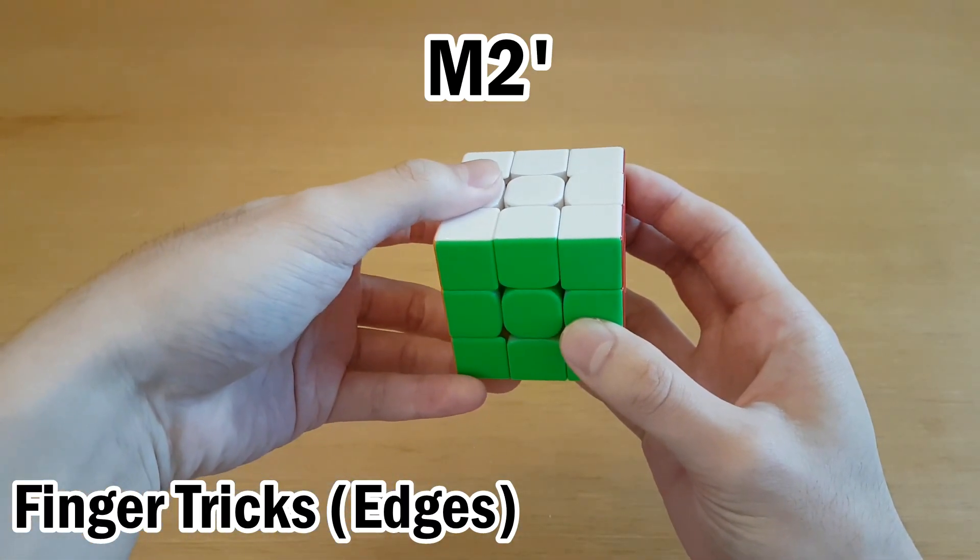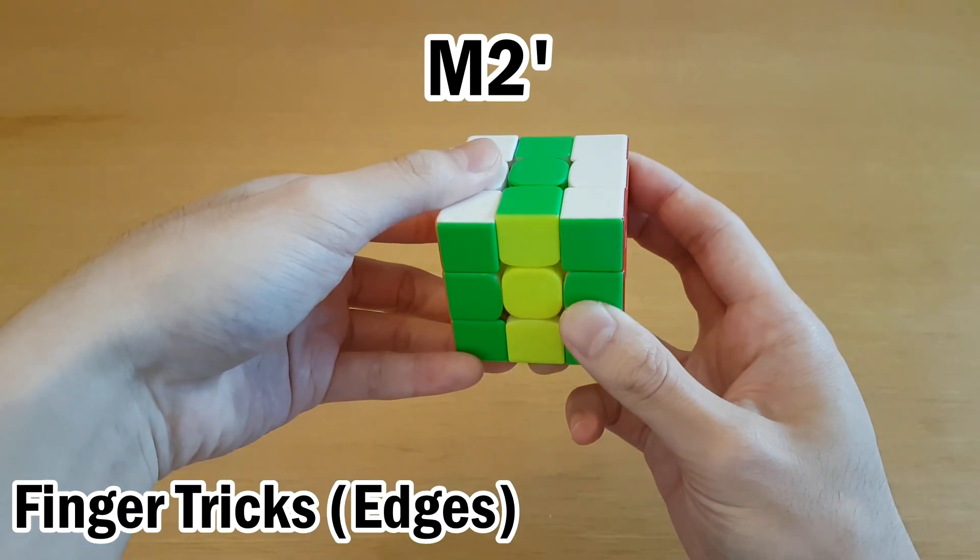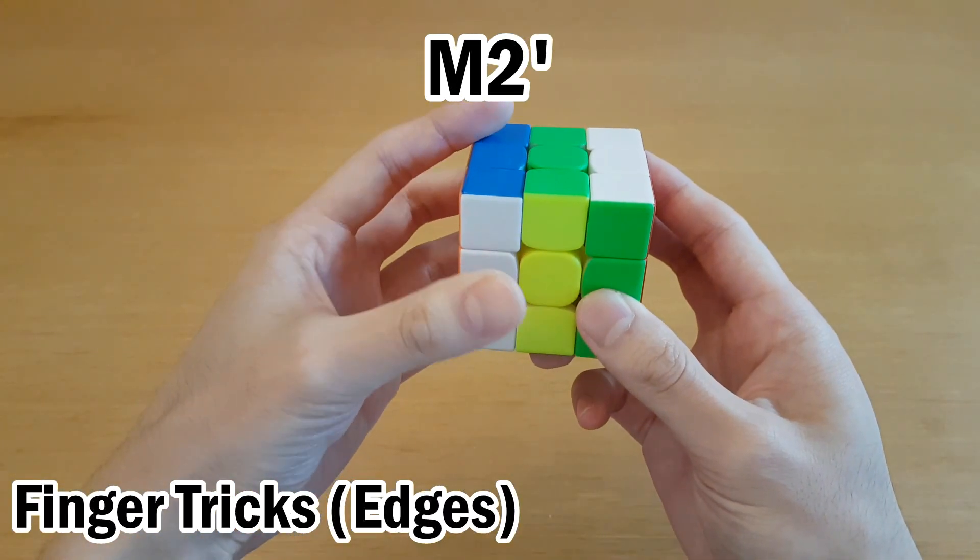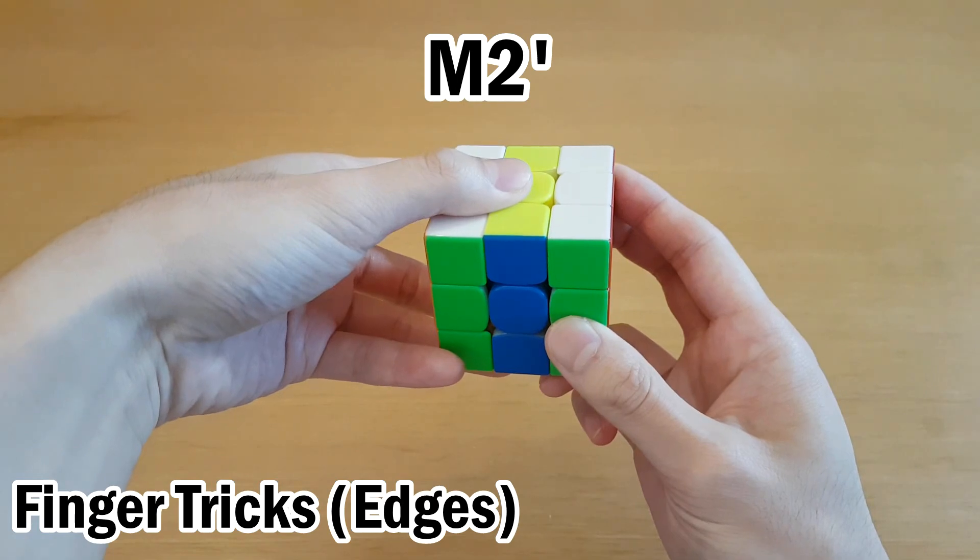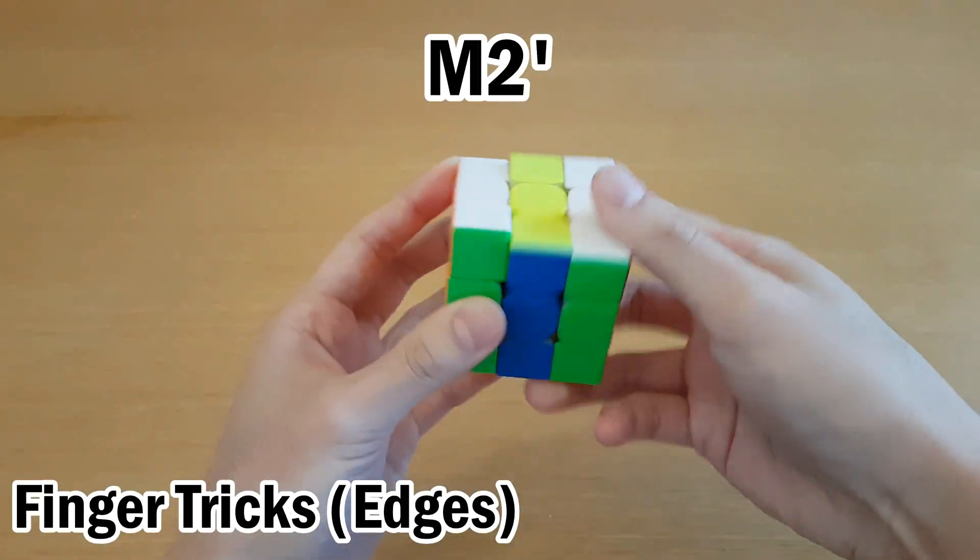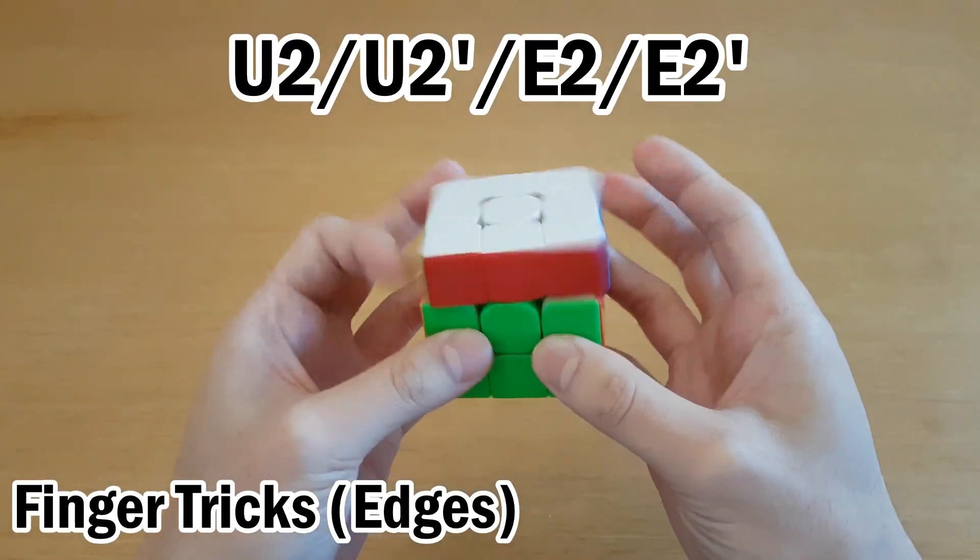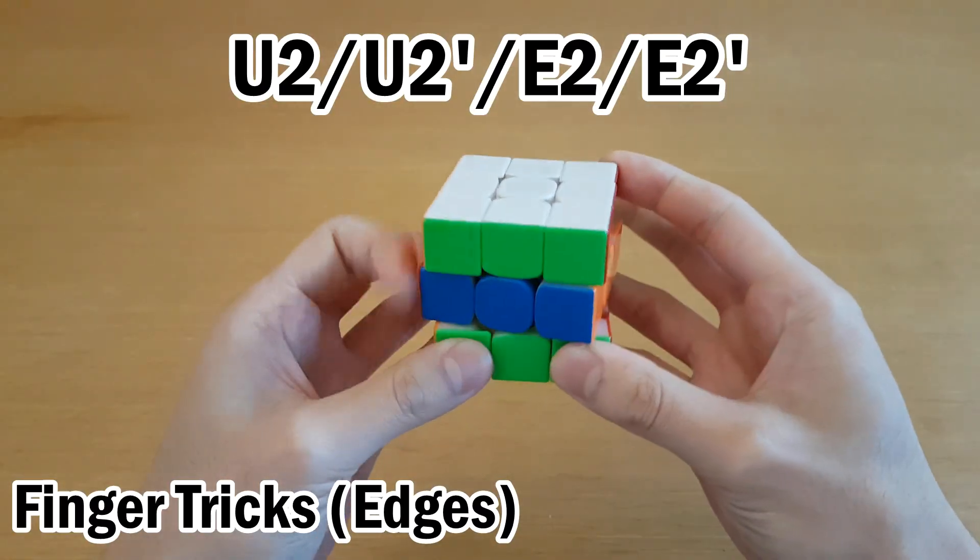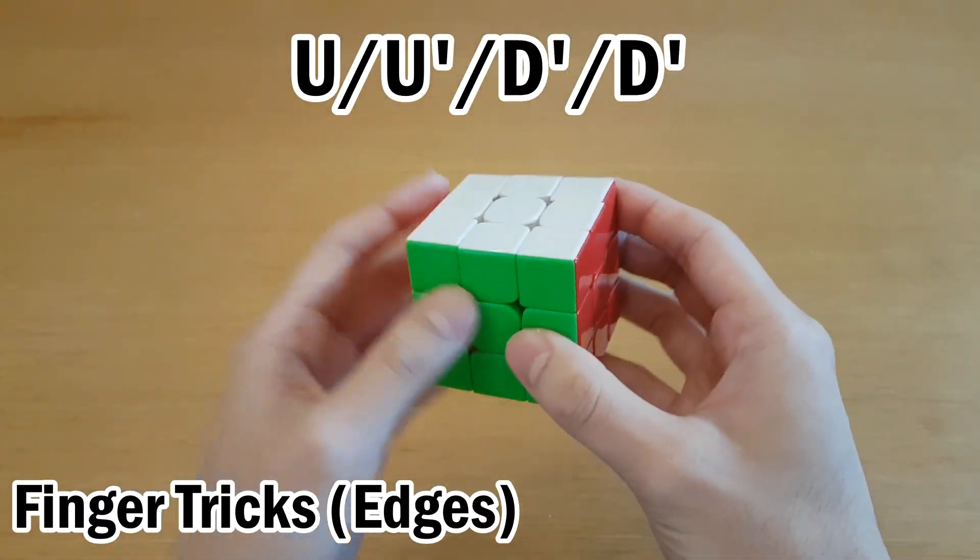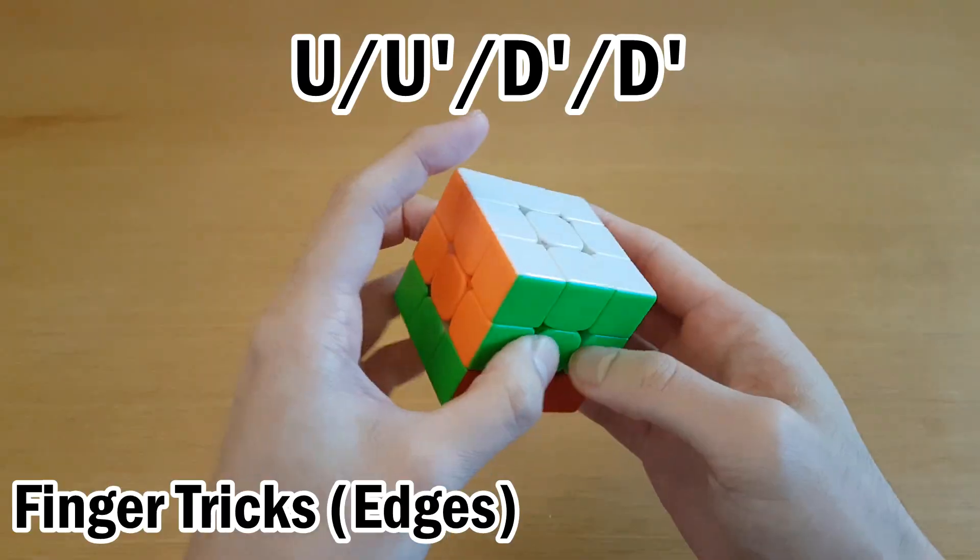And if one of your hands is gripped up, I think the best way from here is often M' and then move this down at the same time to catch this for another M'. So that would look like this. And then right hand as well. And then there's U2 and E2 with either of your hands. Besides that, you need the same finger tricks from corners, like U moves and D moves.